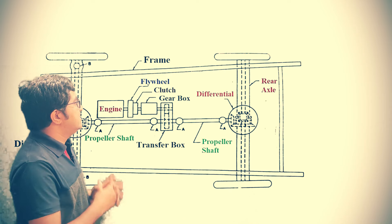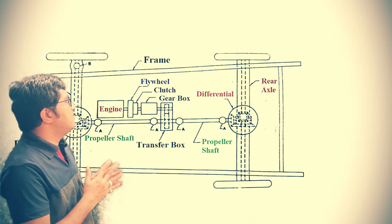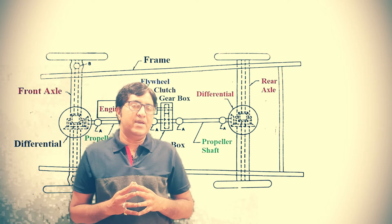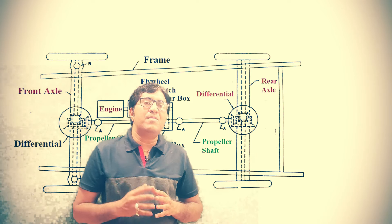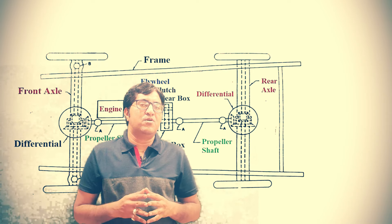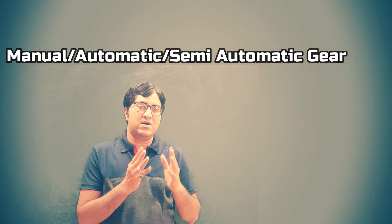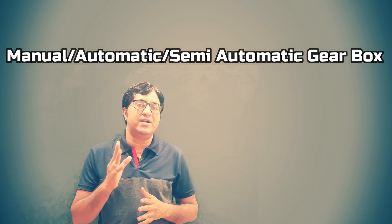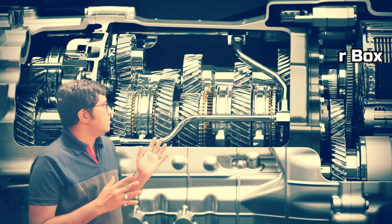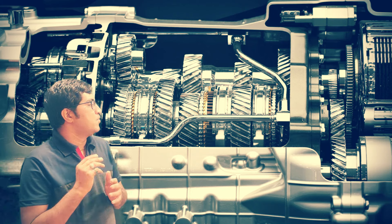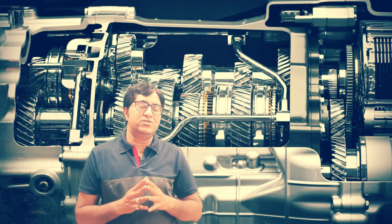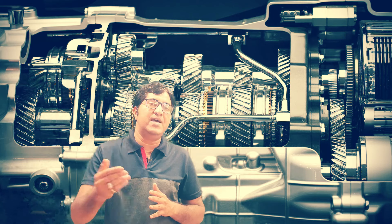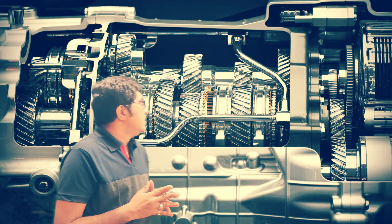The next component is the gearbox, also known as the transmission system. In automobiles, we use different types of gearboxes: manual, automatic, and semi-automatic. The function of the gearbox is to provide different leverage to the driving wheels — it changes the speed as well as the torque.